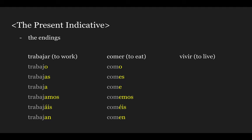Lastly, we're going to conjugate the verb vivir, which means 'to live.' You will have: vivo, vives, vive, vivimos, vivís, and viven. So you get the -o, -es, -e, -imos, -ís, -en endings for this verb.